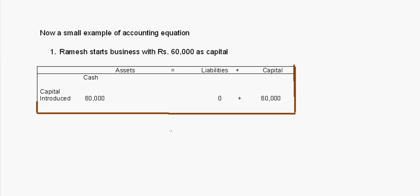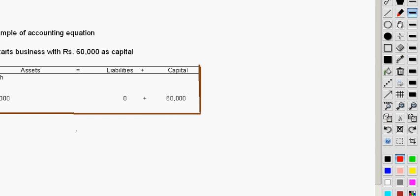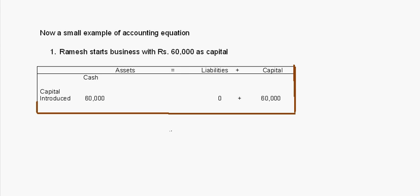Let's take a small example. The first transaction: Ramesh starts business with Rs. 60,000 as capital. Cash comes in when Ramesh brings Rs. 60,000 as capital, and cash is an asset. So cash is 60,000 and capital is 60,000; liabilities is 0. The transaction is noted as 'capital introduced.' We can see the effect of this is an increase in one asset and an increase in capital.